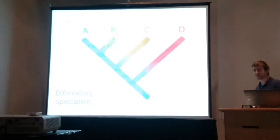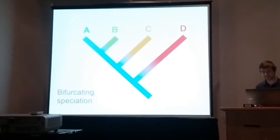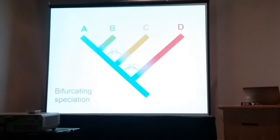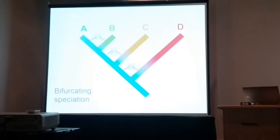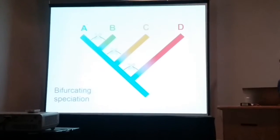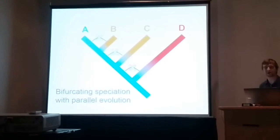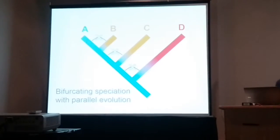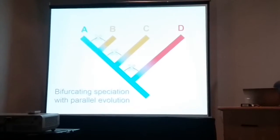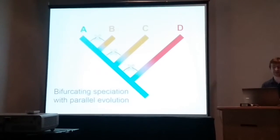As biologists, we're all familiar with bifurcating tree-like speciation, where species can fall from reproductive isolation from closest relatives, often due to some kind of shift in phenotype. We're also looking at a related situation: bifurcating speciation and parallel evolution. Here, lineages acquire reproductive isolation from the closest relative, but two or more lineages evolve a similar phenotype.